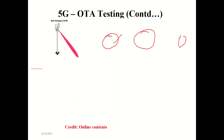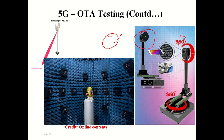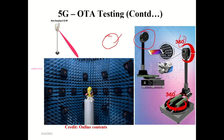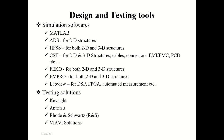Beamforming measurement requires two-axis positioning — azimuth rotation and elevation rotation — to capture each beam separately and process the measurements. The positioner allows the antenna beam to be characterized in both planes.